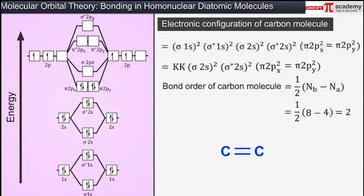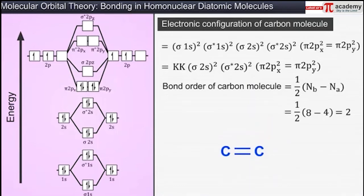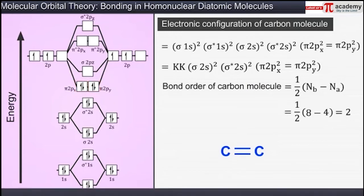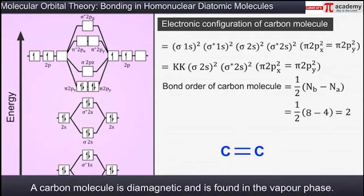In a carbon molecule, the two atoms have a double bond between them. Both bonds are pi bonds due to the presence of 4 electrons in the two pi molecular orbitals. A carbon molecule is diamagnetic as no unpaired electron is present in its molecular orbitals, and it is found to exist in the vapor phase.